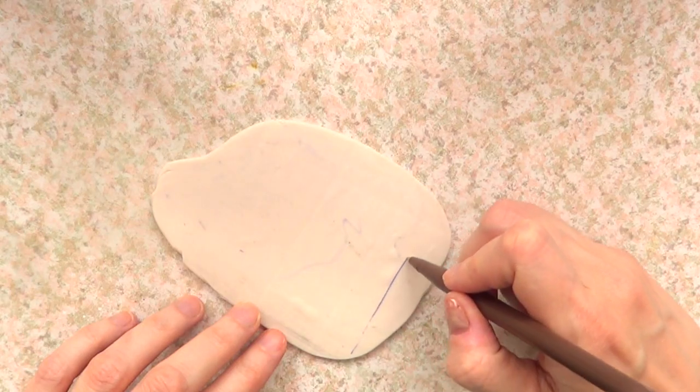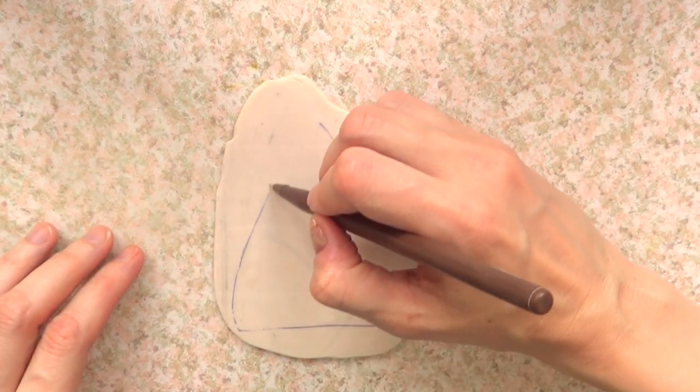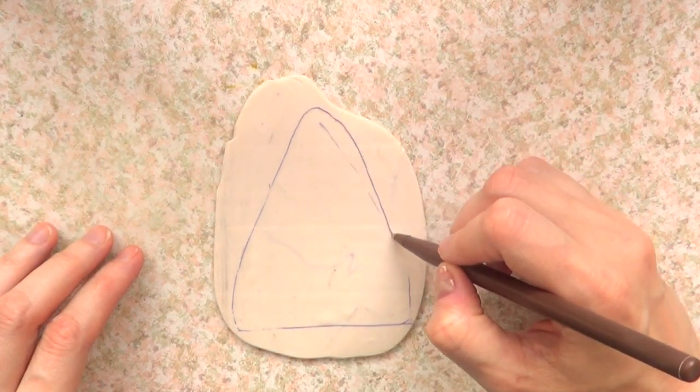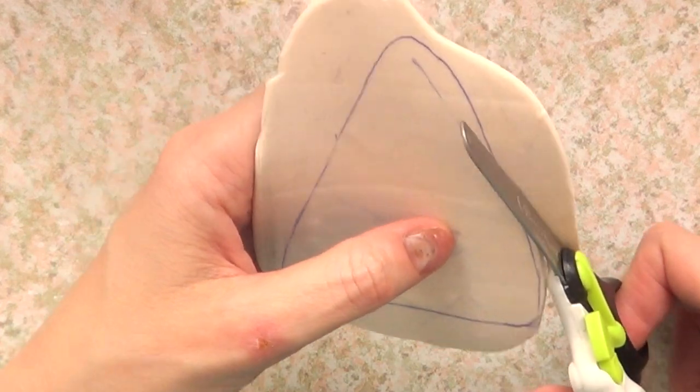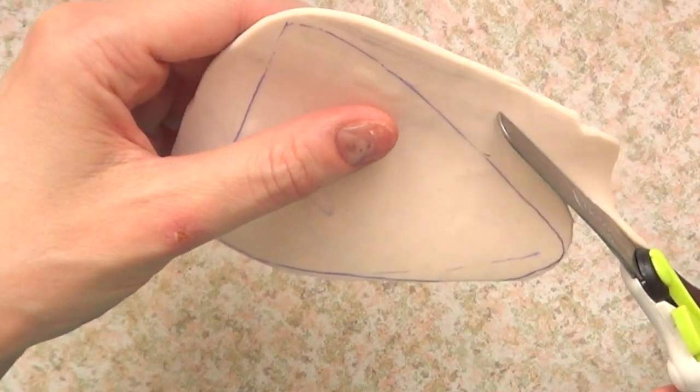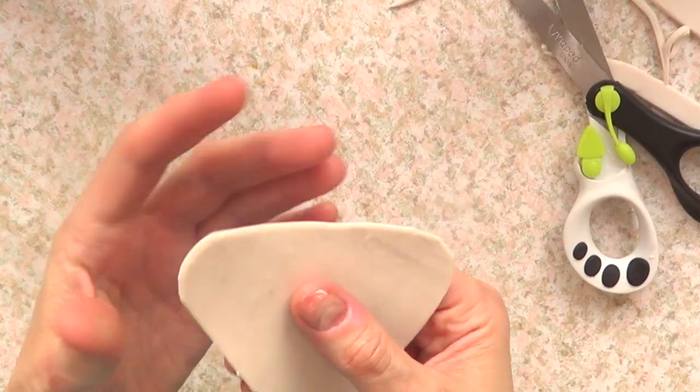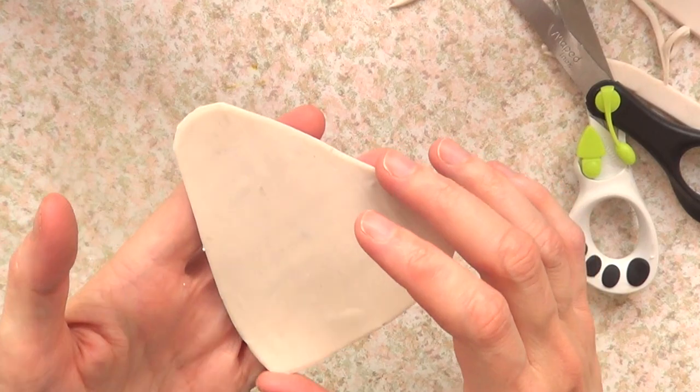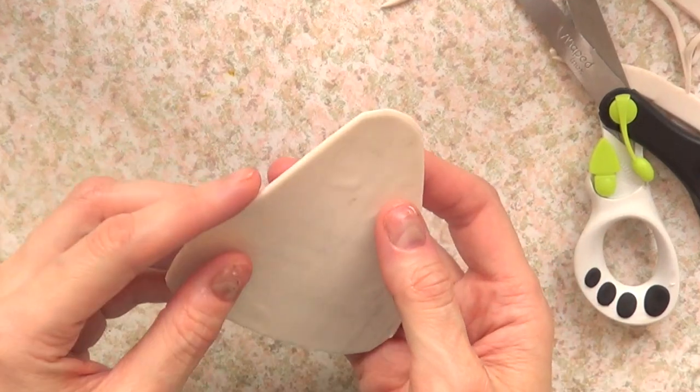Then I'm going to take a pen and I'm going to draw a triangle, simulating a candy corn. Then I'm just going to take my scissors and cut in that shape. I'm going to make the edges smooth and all that stuff so I can move on to the next step, which is making the base.